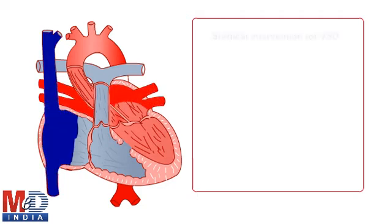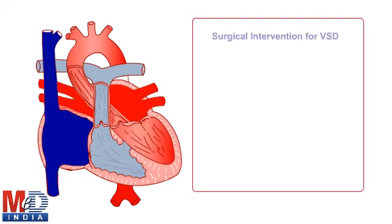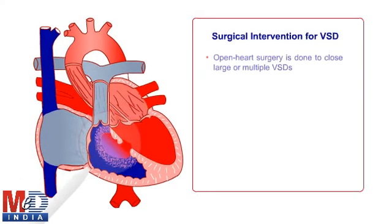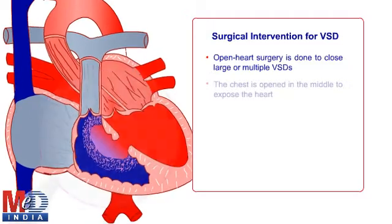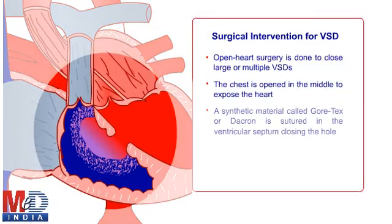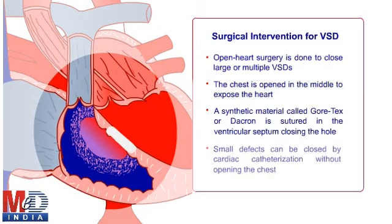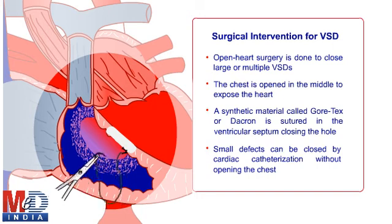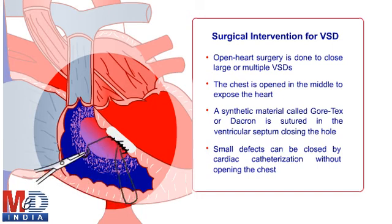During open heart surgery, a synthetic material called Cortex or Dacron is used to close the defect. Moderate to large-sized defects or multiple VSDs can be closed by surgery.